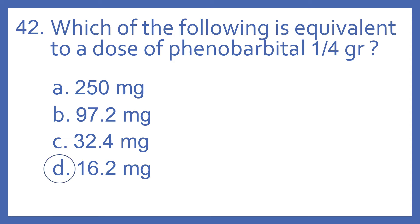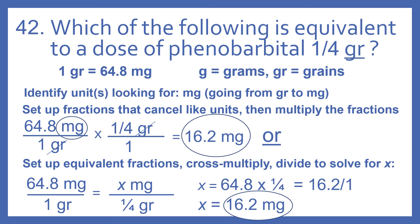And the answer is D, 16.2 milligrams. Our dose of phenobarbital is one-fourth gr. gr stands for grains. Remember, g is grams, gr is grains. And one grain equals 64.8 milligrams.